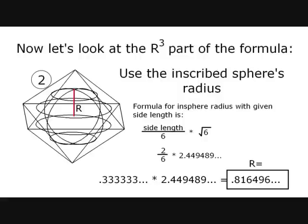For an octahedron, it is side length divided by 6 multiplied by the square root of 6. I have broken down that formula into the steps for you to see how I arrived at an r value of .816496 for an octahedron with a side length of 2.